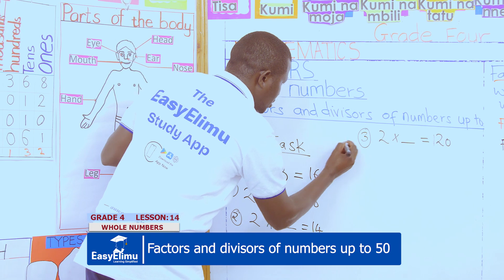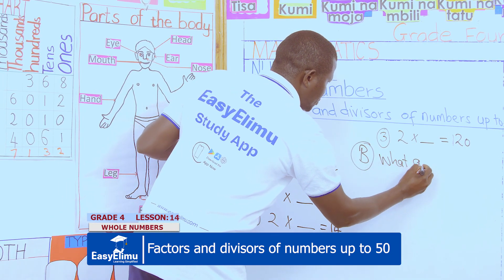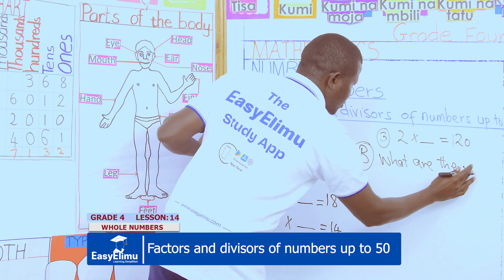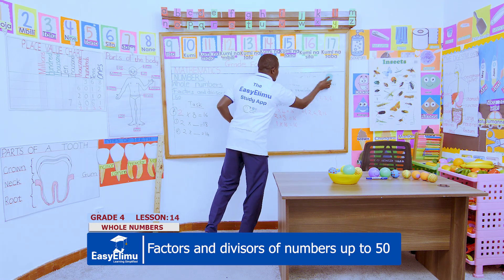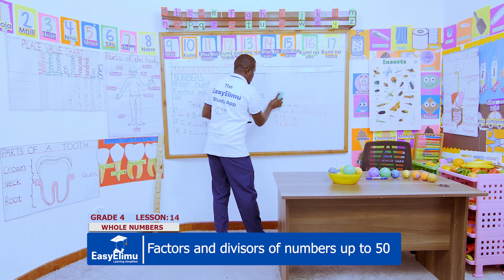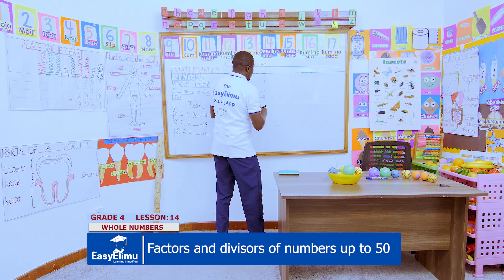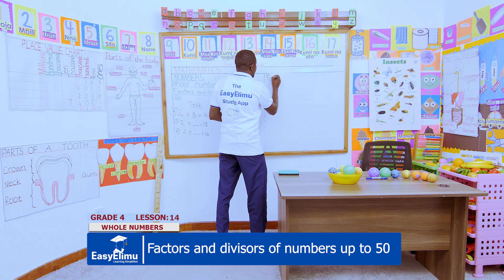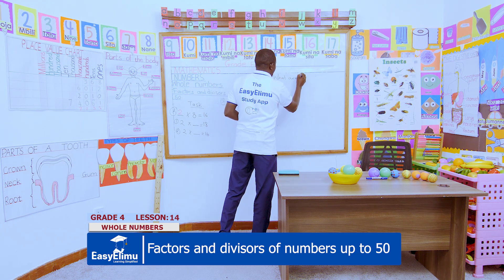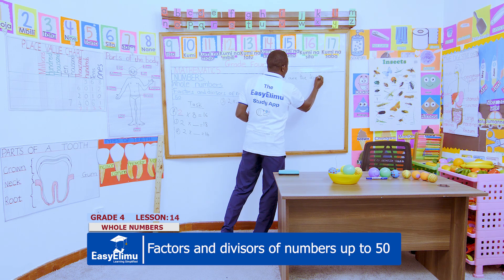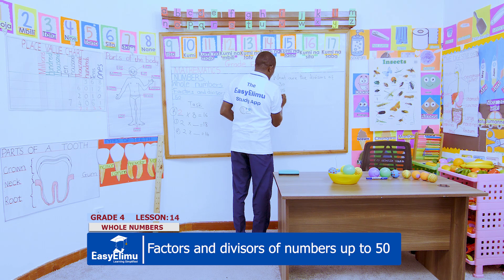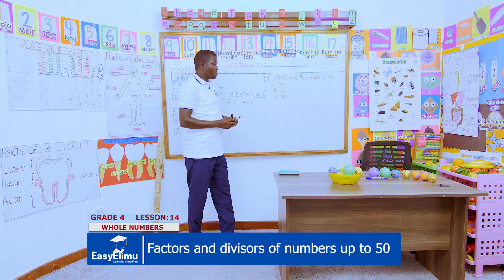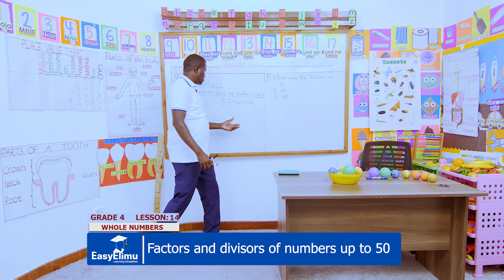And the last activity — this was activity A. Now I have activity B. What are the divisors of these numbers? Numbers which can divide these numbers without a remainder, the same way you've done on the other side. Find the divisors of: number one — 30; number two — 15; and the last one — number 48. Look for these divisors.